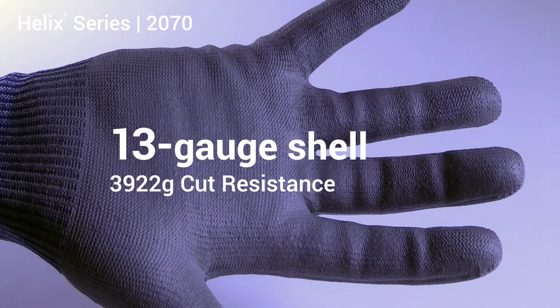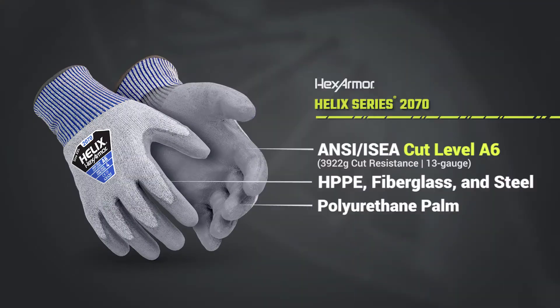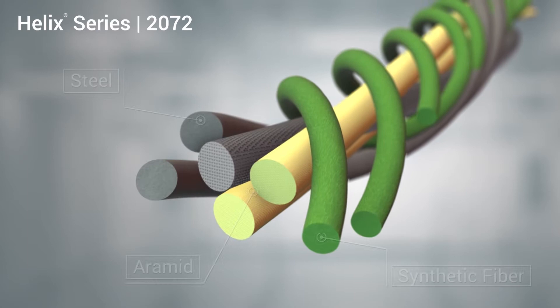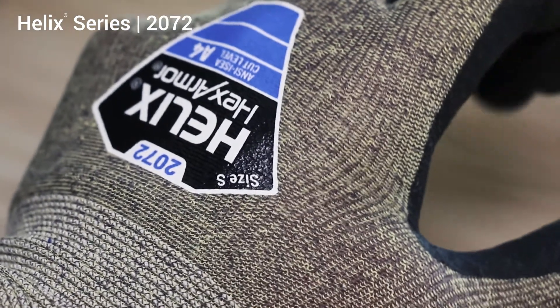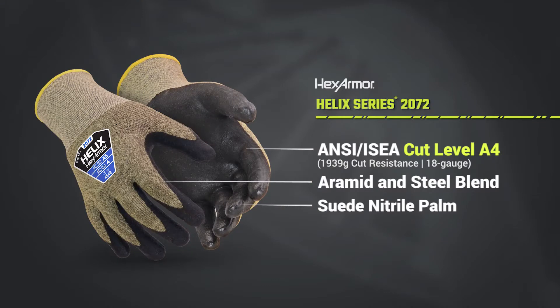The 18-gauge 2072, made from aramid and steel, is a level A4 cut-resistant glove—the most cut-resistant glove, 1900 grams, in the industry relative to its gauge.